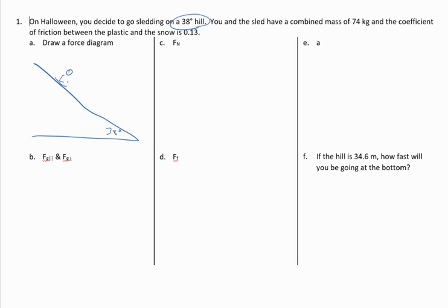You are sitting on a sled on the hill. So you and the sled have a combined mass of 74 kilograms and the coefficient of friction, which tells us how much the friction is, is this 0.13 value.